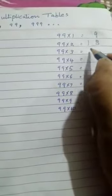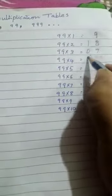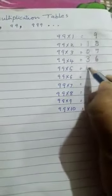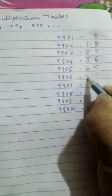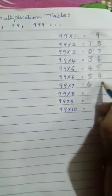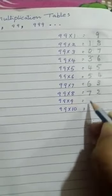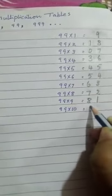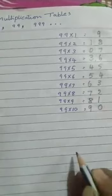9, 18, 27, 36, 45, 54, 63, 72, 81 and 90. Now, this is not the product of the table of 99.